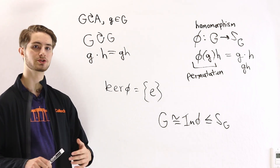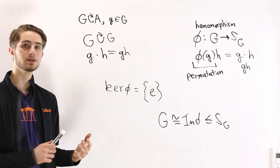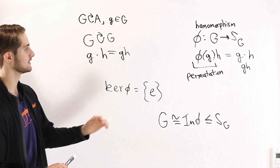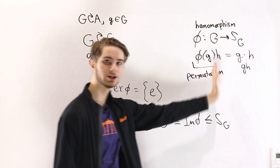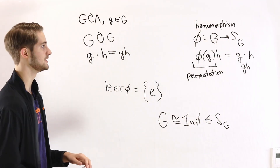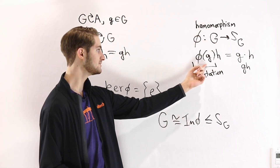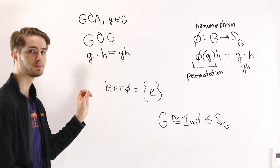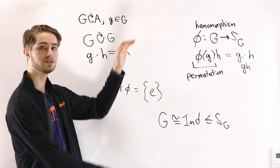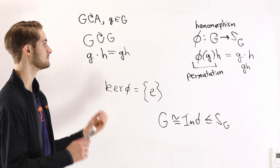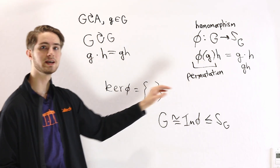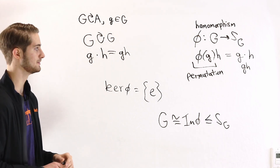The way we get Cayley's theorem is by realizing that if we look at all the elements of the group as one long list, and take some specific g and multiply it onto all of those elements, what that does is switch them around — it permutes them. So we can think about every g as just being a permutation of the group elements.